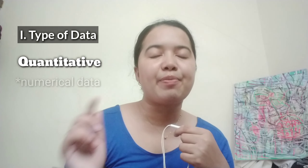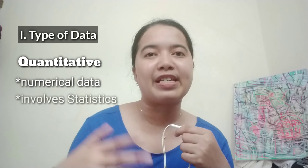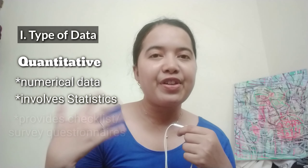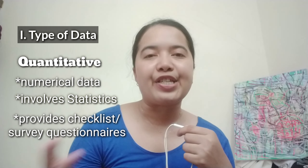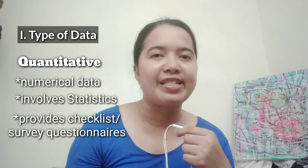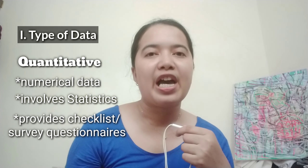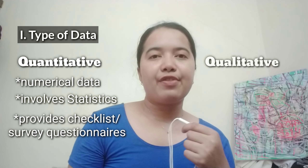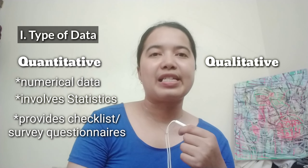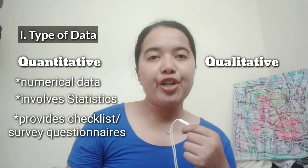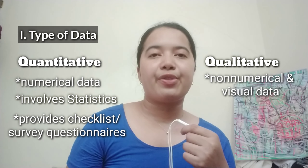For quantitative research, the type of data it is collecting is numerical data. That is why we have statistics. Most of the time, we provide checklists and survey questionnaires for our respondents to answer. For qualitative research, the type of data it is collecting is non-numerical data and visual data.